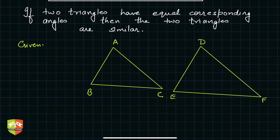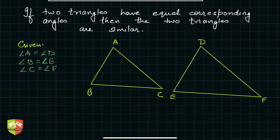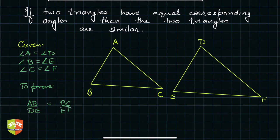Given: angle A equals angle D, angle B equals angle E, and angle C equals angle F. What do we need to prove? We need to prove that AB/DE = BC/EF = CA/FD.